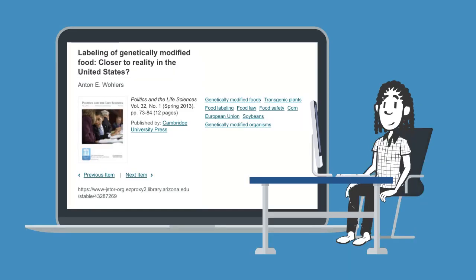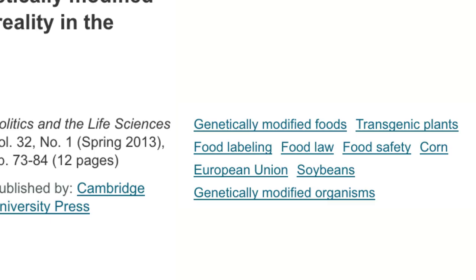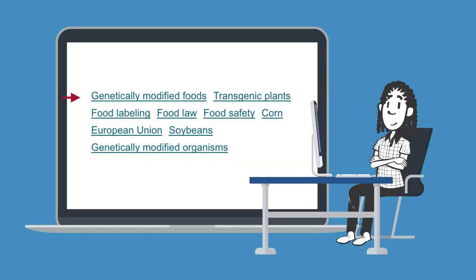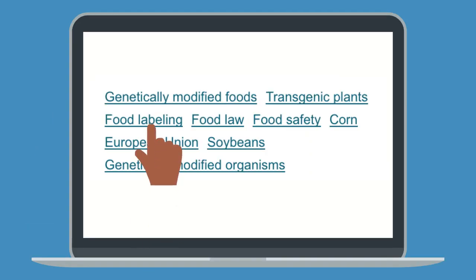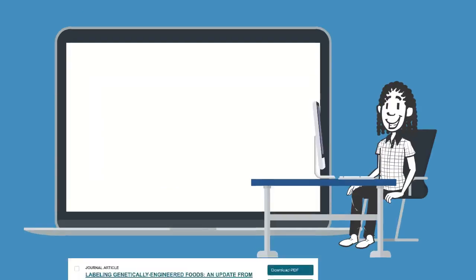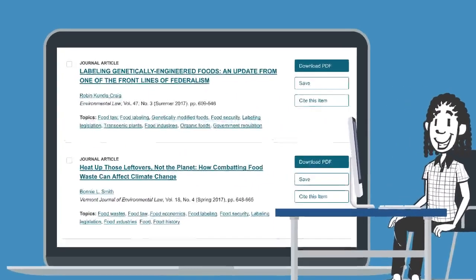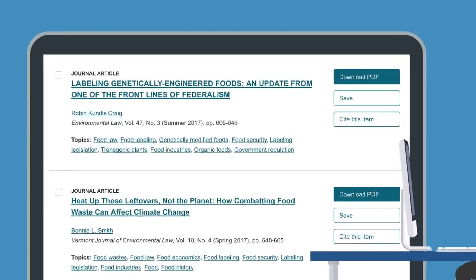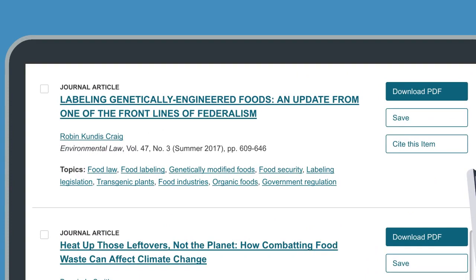When you find a good article, you can use the subject terms assigned to it to help you find more articles on the same topic. Subject terms are like tags that the database gives to articles so you can find similar articles easily. When you notice these, click on the subject term that is relevant to your topic. This will give you articles that are actually about the topic rather than articles that just mention your words in passing.